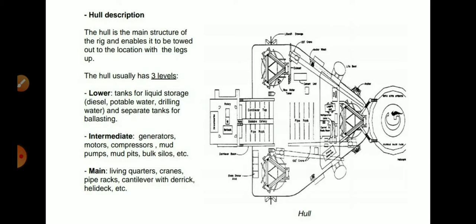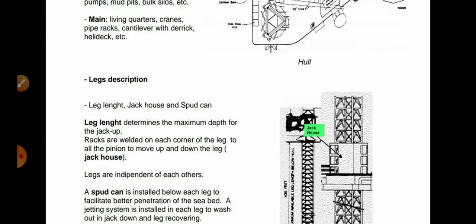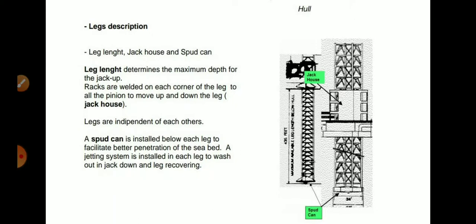They divide the hull into three compartments, much like floors in an apartment building — first floor, second floor, third floor. Similarly, the hull has lower, intermediate, and main levels. This is very important because in the jackup rig the area is congested — there is very limited area where they are performing so many operations.